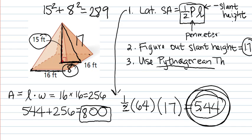I took the 17 and I plugged it in for the slant height here, and then the perimeter of the base, which is the P, was 64 because it's 16 plus 16 plus 16 plus 16. So that number went there,